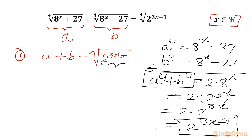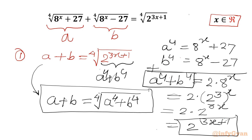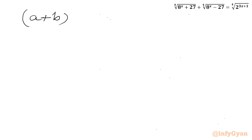Notice that a⁴ + b⁴ = 2^(3x+1), which is exactly the radicand on the right-hand side. So we can write a + b = ⁴√(a⁴ + b⁴). Now raise both sides to the power of 4, giving (a + b)⁴ = a⁴ + b⁴.